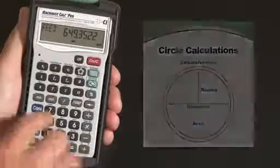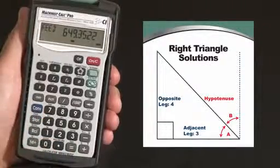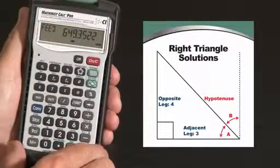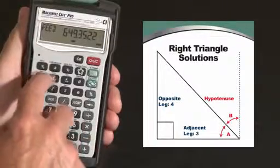The row of keys here is for finding the legs of a triangle or the hypotenuse of a triangle and the angle, adjacent angle. And the top row here is for trig functions.